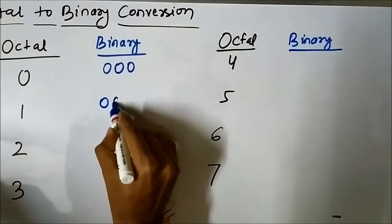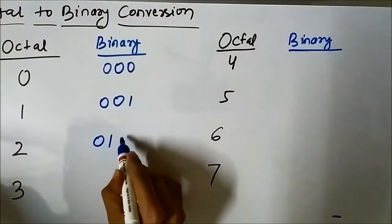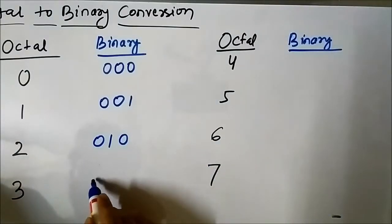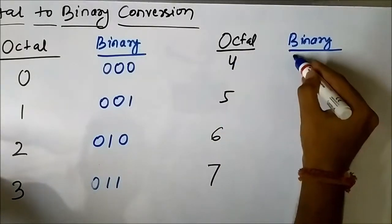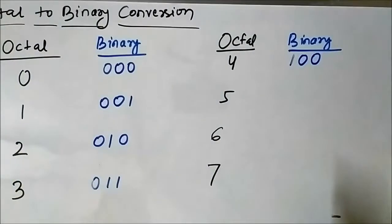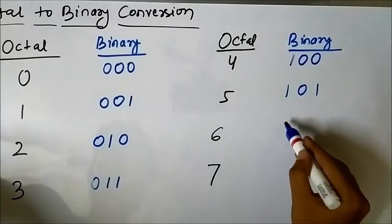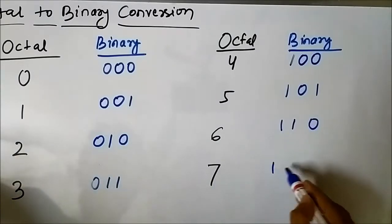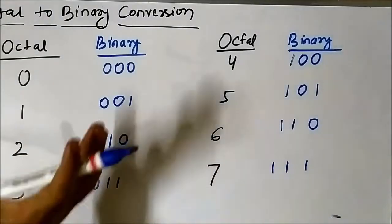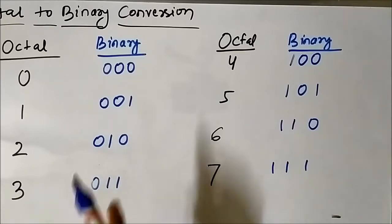One can be written as 0 0 1, two can be written as 0 1 0, three can be written as 0 1 1, four can be written as 1 0 0, five can be written as 1 0 1, six can be written as 1 1 0, and seven can be written as 1 1 1. This is the binary representation of each of the eight symbols used in the octal system. And why we are using three bits — let us explain that.